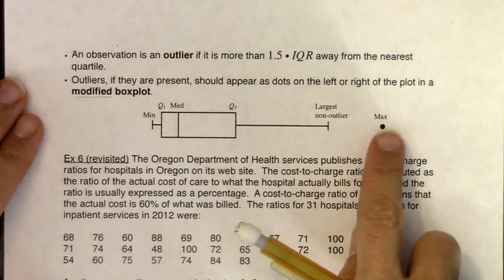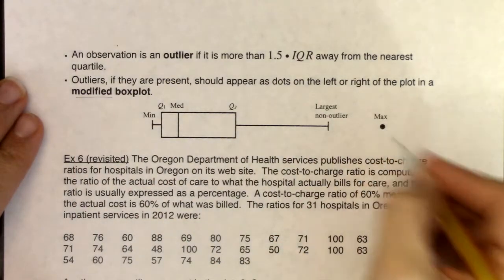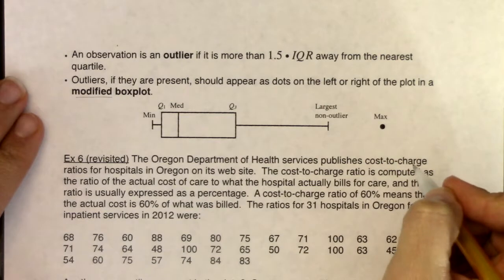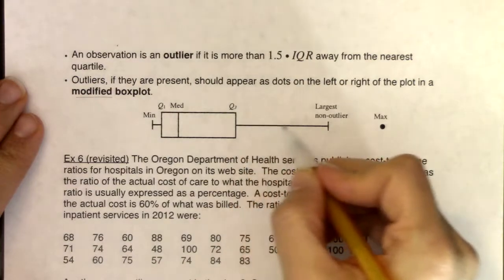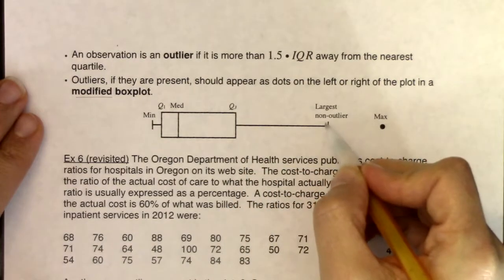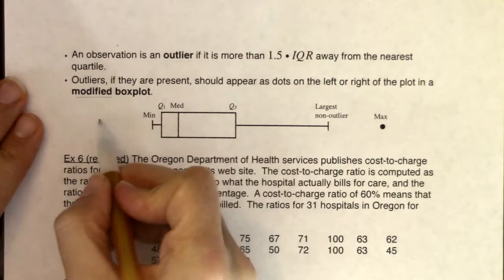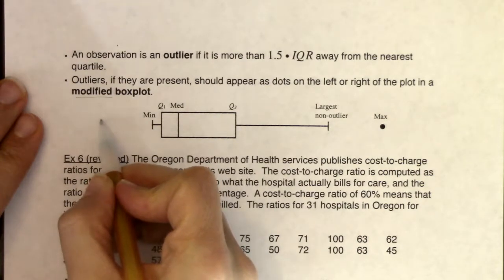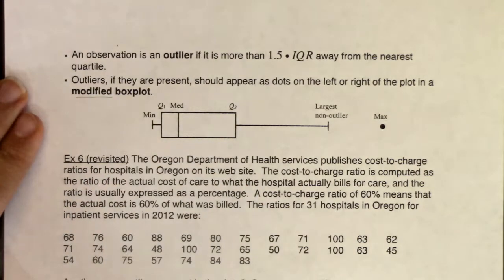If you have an outlier on the high end of your data, you'll see an isolated dot off to the right on the high side of the x-axis. And instead of whiskering all the way out to the max, I will whisker out to the largest non-outlier. If I had an outlier on the low end, I would have a dot there and whisker out to the lowest non-outlier.